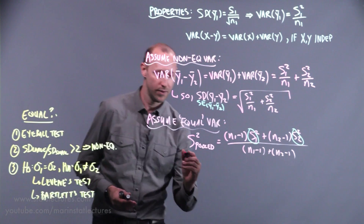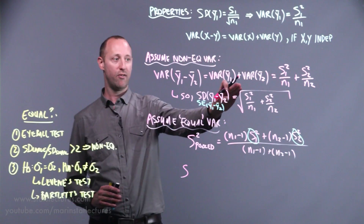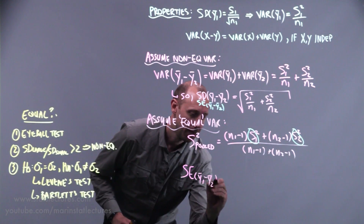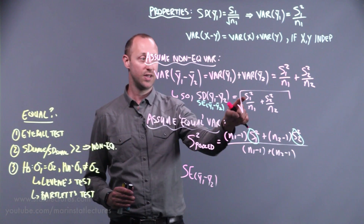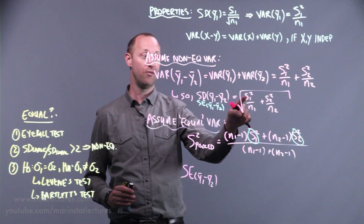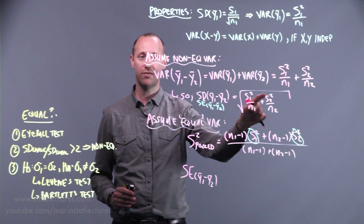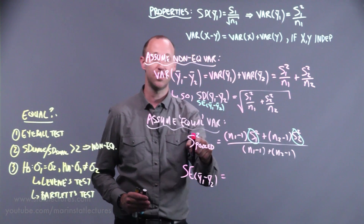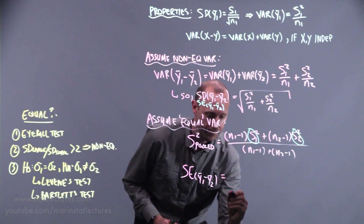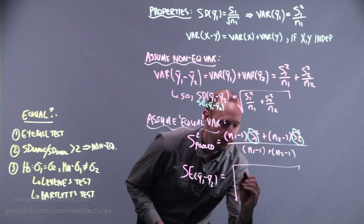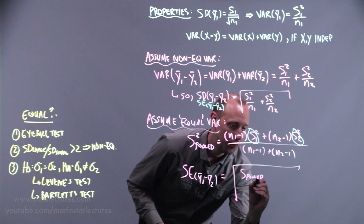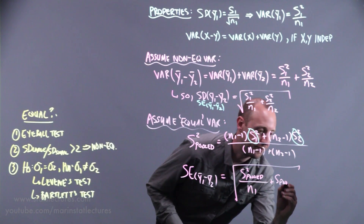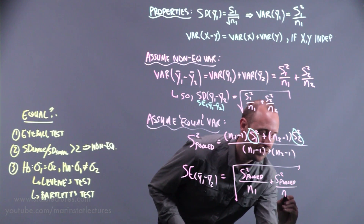From there, we use the same approach to find the standard error for the difference in the two means, but rather than using the separate sample variances for group 1 and group 2, we replace them with this pooled variance — divided by sample size for group 1, plus the pooled variance divided by sample size for group 2, then take the square root.